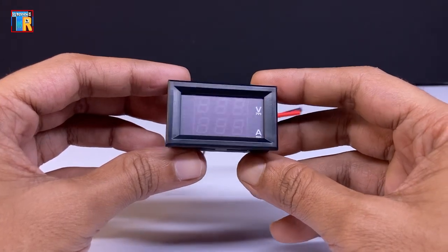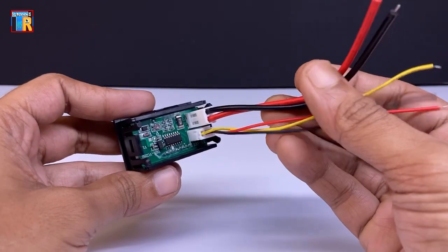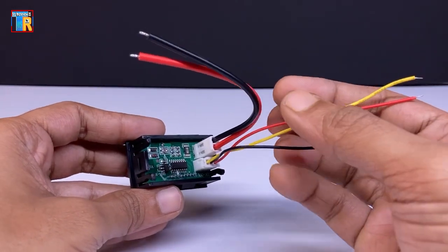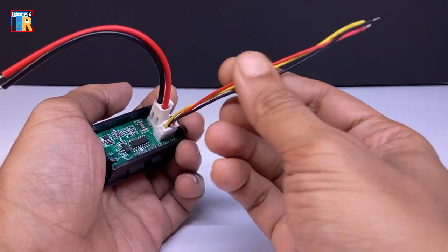Today I am going to show you a voltmeter with an ampere meter that can measure DC voltage and current. In this video I will demonstrate how to use it and provide its connection details.